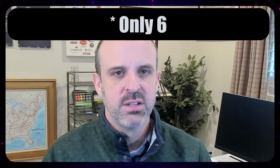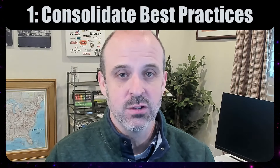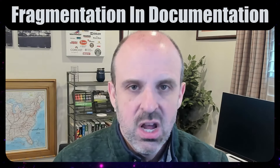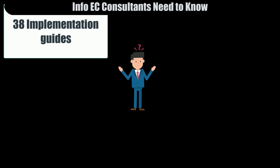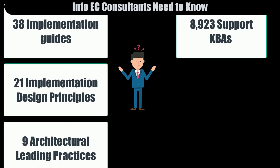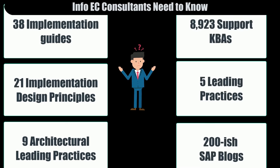How would I fix things? I have eight steps. Step one: consolidate SuccessFactors best practices. Going to seem like a strange place to start, but stay with me — this is the foundation. There is just so much fragmentation in SuccessFactors documentation. Just for EC and platform, I need to know 38 implementation guides, 21 implementation design principles, nine architectural leading practices, and on top of that, 8,923 support KBAs. Many of those really do constitute best practice and should go into the implementation guides. This needs to be consolidated, as it's near impossible to keep up with it all.